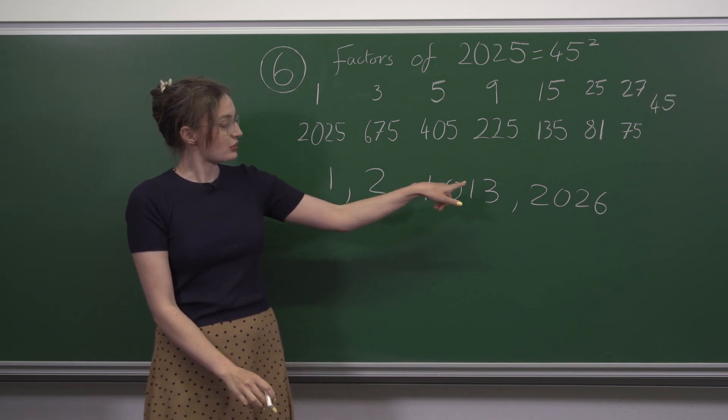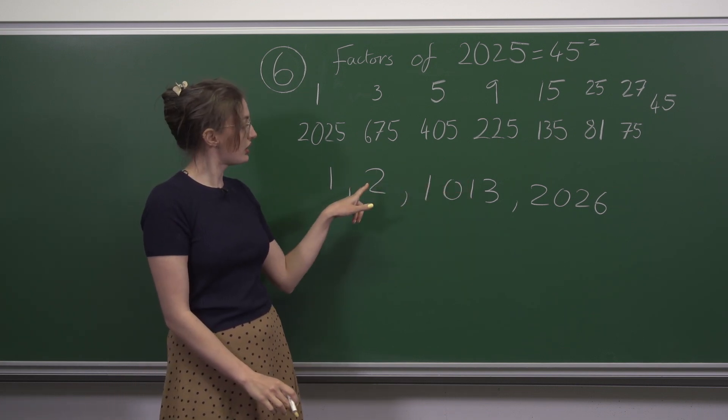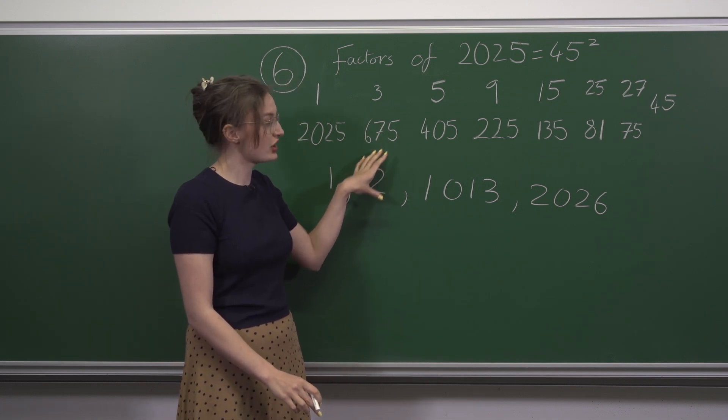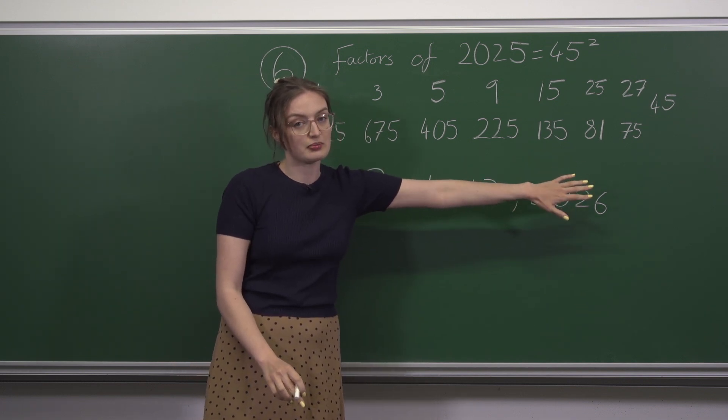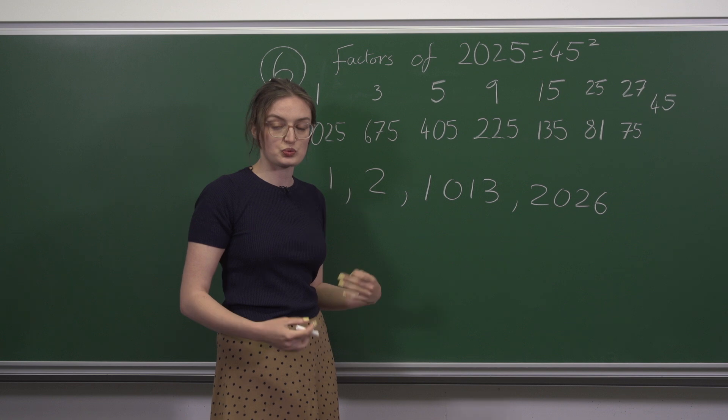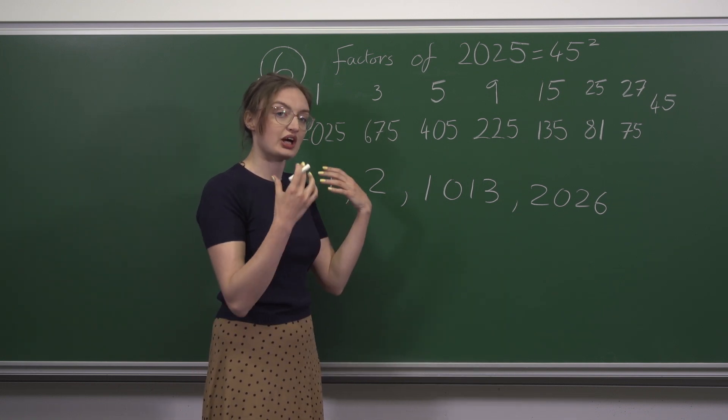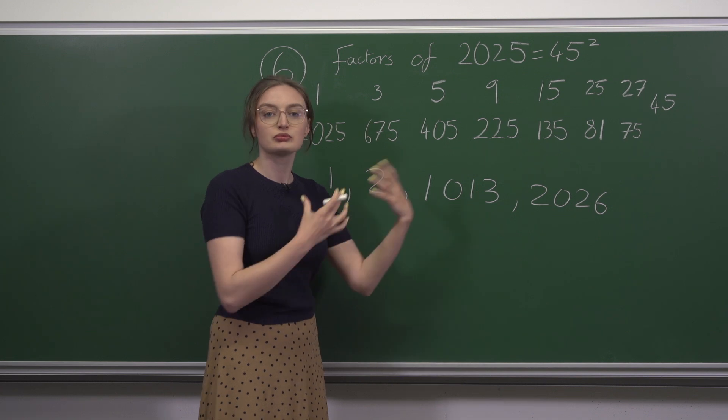1 and 1013 are odd and 2 and 2026 are even. The even factors don't affect whether the sum is odd or even because when you add an even number to an even number you get an even number and when you add an even number to an odd number you get an odd number.